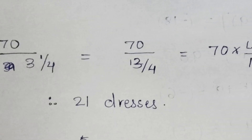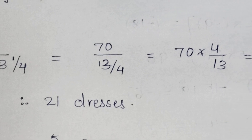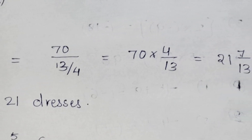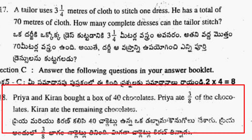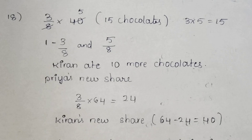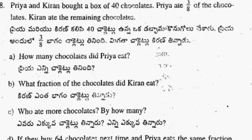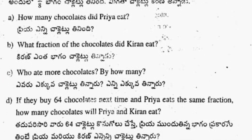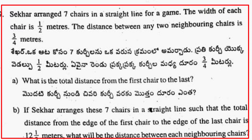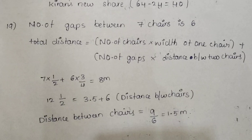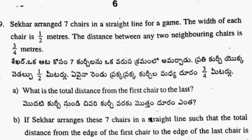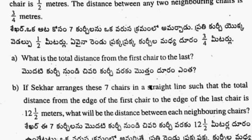21 dresses are the correct answer — step by step solve, marks are the same, step by step. Next, 18th question answer. 19th question answer: 8 meters, 1.5 meters. 19th question complete.